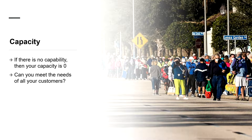Workforce capacity is related to capability in that if the capability isn't there, then the capacity is zero. For areas where there is sufficient capability, capacity is about how much can be provided. Going back to the vaccine example: if you're running a vaccination clinic and there's demand from 300 million people, but you only have the capacity to complete six vaccines an hour, how long will it take to meet that demand? The answer is 5,708 years — and that's if you keep the clinic open 24 hours a day, seven days a week. So capability and capacity are really two sides of a coin.